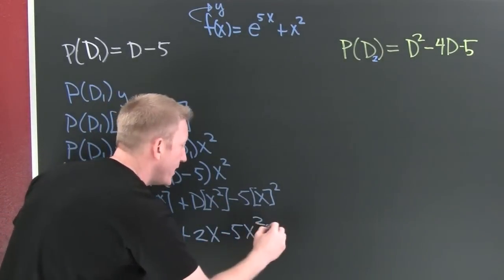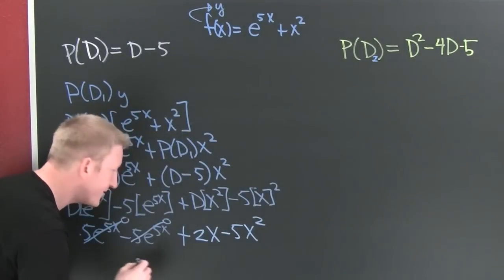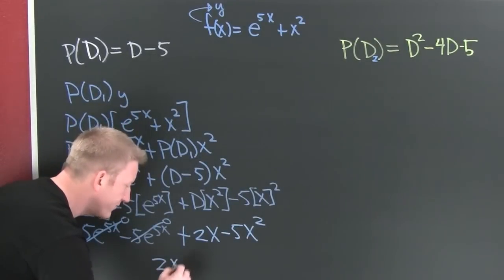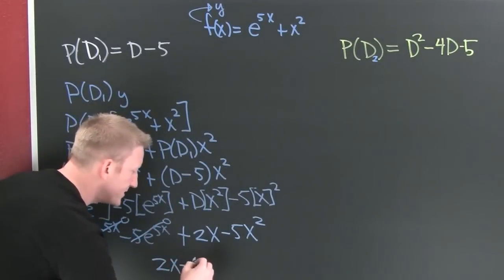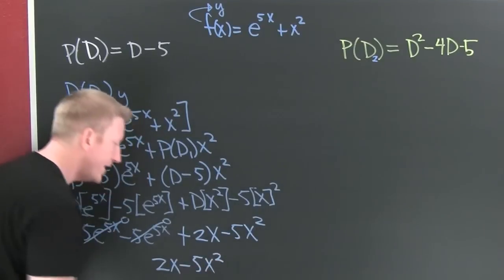After the dust settles, we have 2x minus 5x squared.